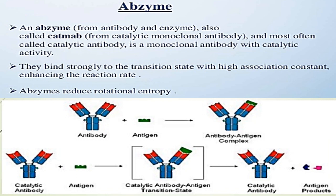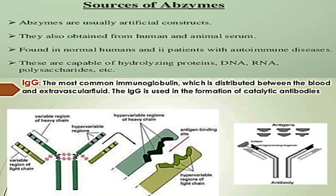Abzymes reduce rotational entropy. Sources of abzymes: abzymes are usually artificial constructs. They are also obtained from human and animal serum, found in normal humans and patients with autoimmune diseases.